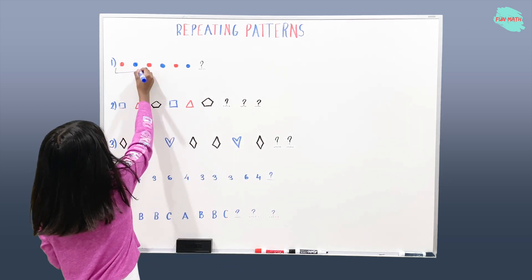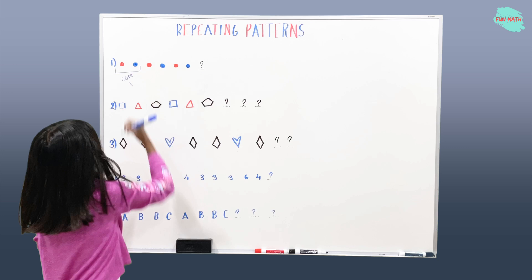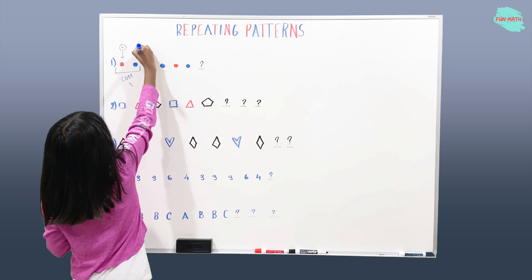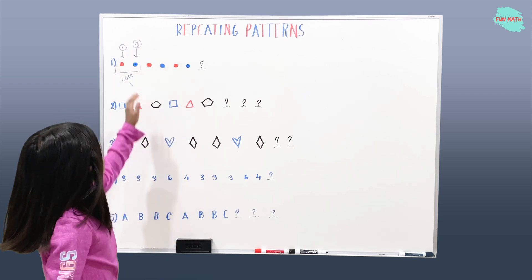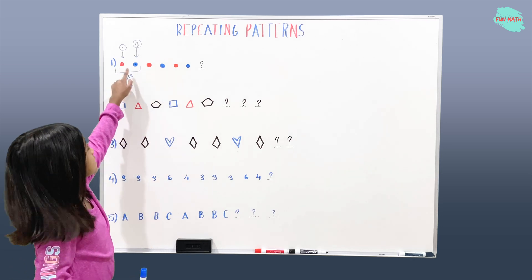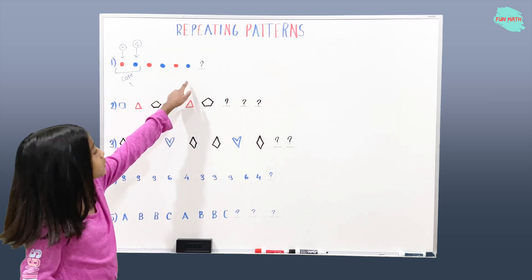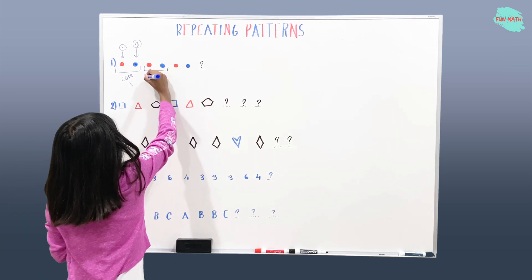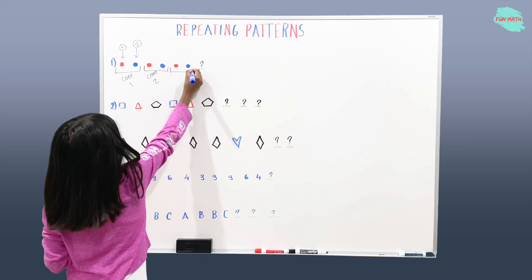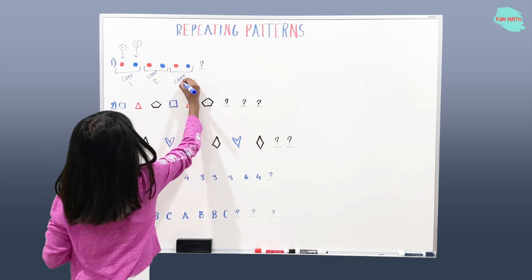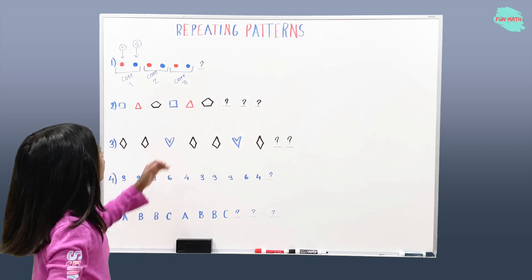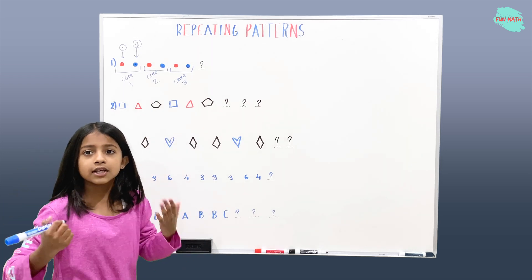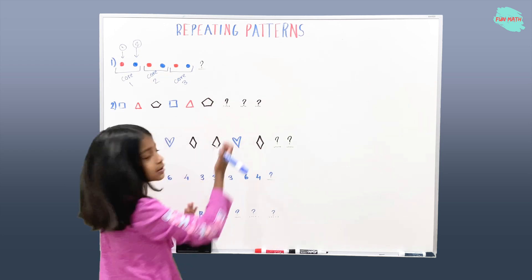So this is step one and this is step two. Step one is repeating and step two is repeating. Step one is red and step two is blue. So now if you see that here is blue — after blue, what comes next? It comes step one. It's red. That's the next color.